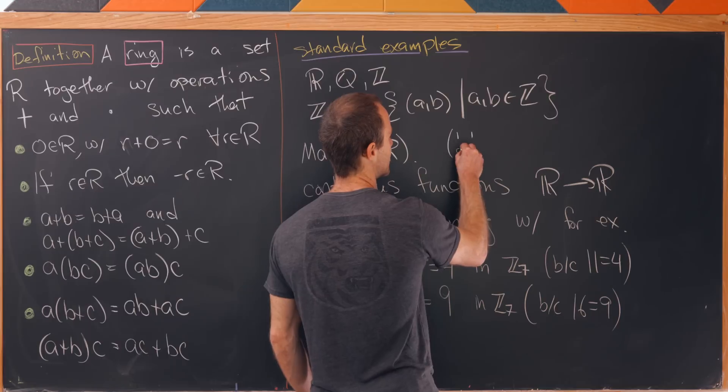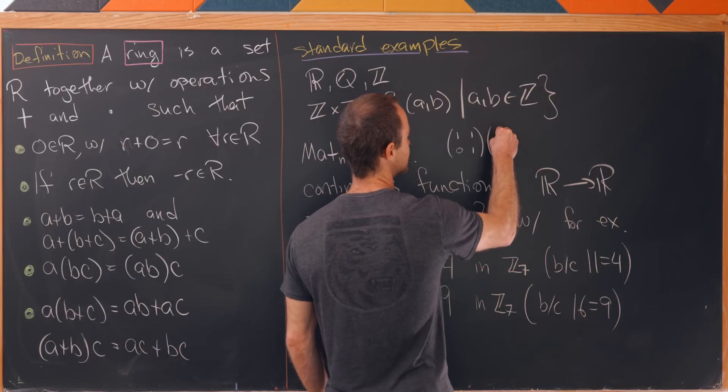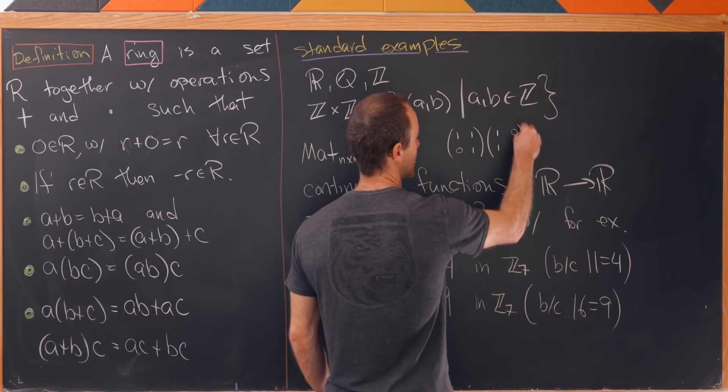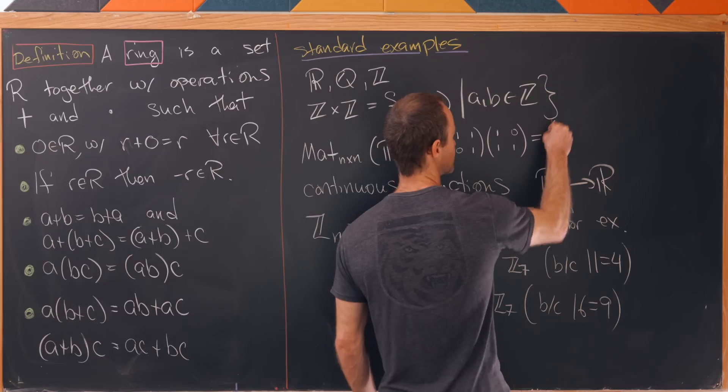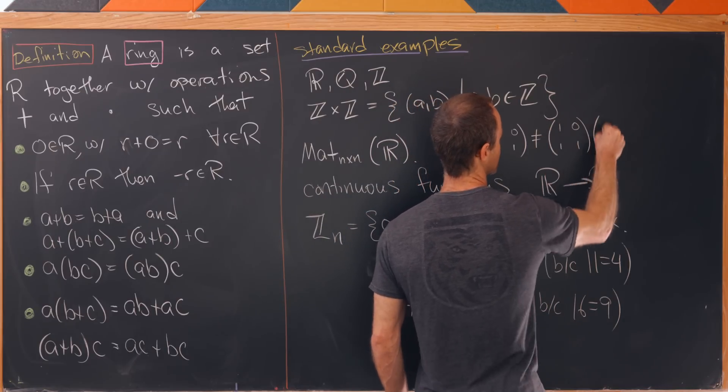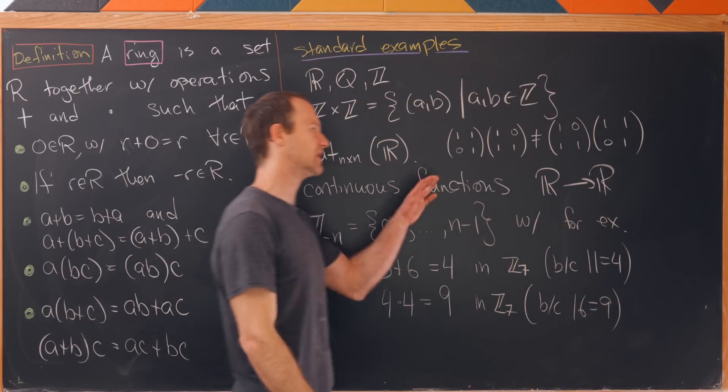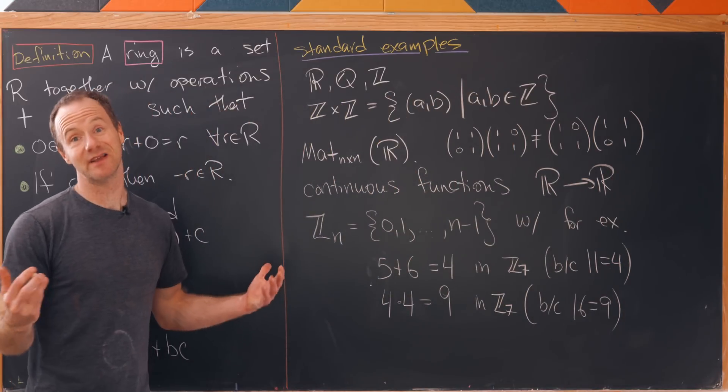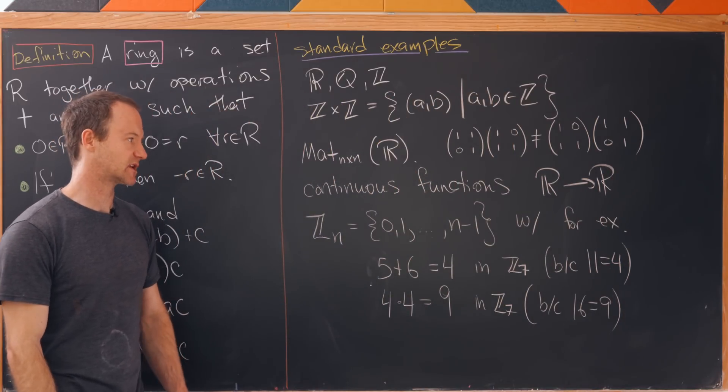Let's look at maybe [[1,1],[0,1]] times [[1,0],[1,1]]. And what you'll notice multiplying those out you get different answers depending on the order of multiplication. I'll let you check that but that is an example of matrices not commuting.